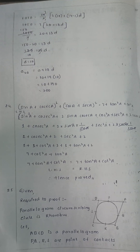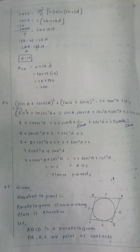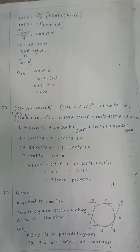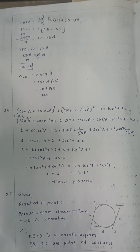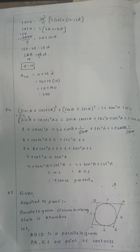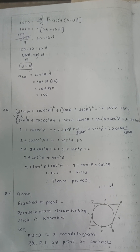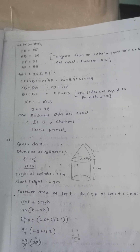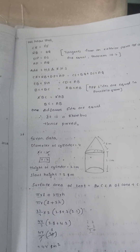A circle is circumscribed in a quadrilateral. Prove that a parallelogram circumscribed about a circle is a rhombus. We can use the property that tangents drawn from an external point to a circle are equal in length.